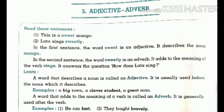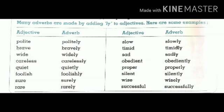So we have reviewed the explanation of adjective and adverb. Now we move to the exercise. Before the exercise, let's look at this box, which is already given in your book. Many adverbs are made by adding -ly to adjectives. Here are some examples. A table of adjectives and corresponding adverbs is given — for example, 'polite' becomes 'politely.'